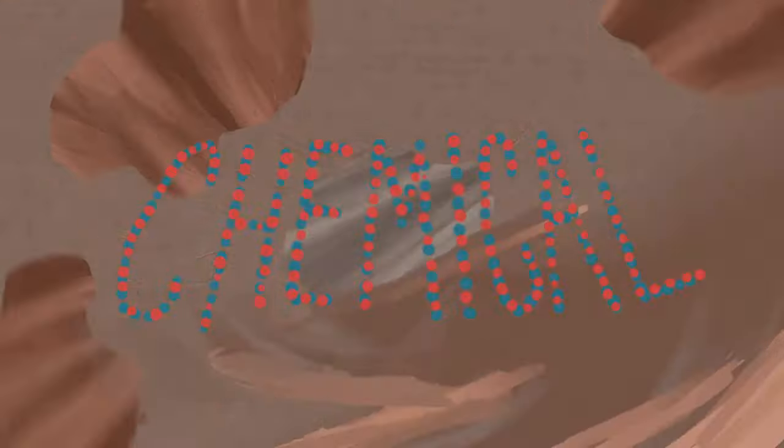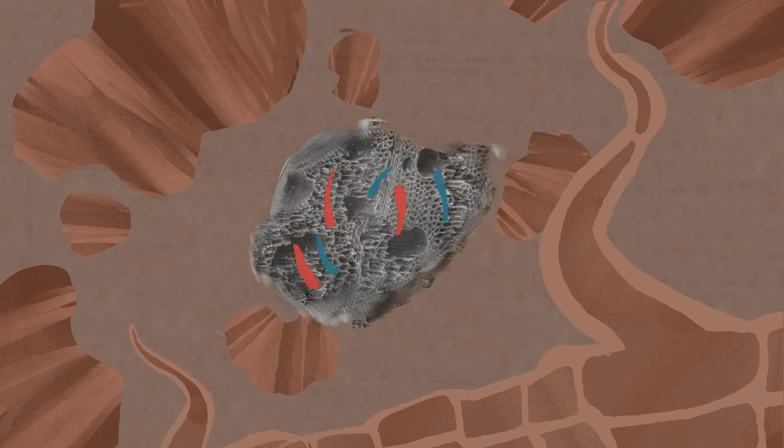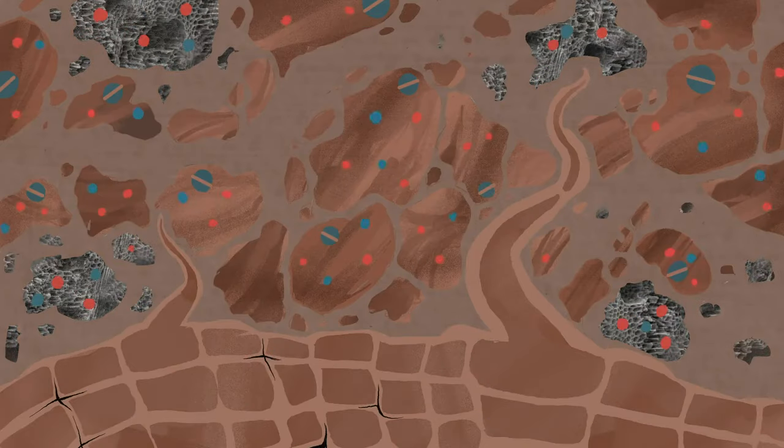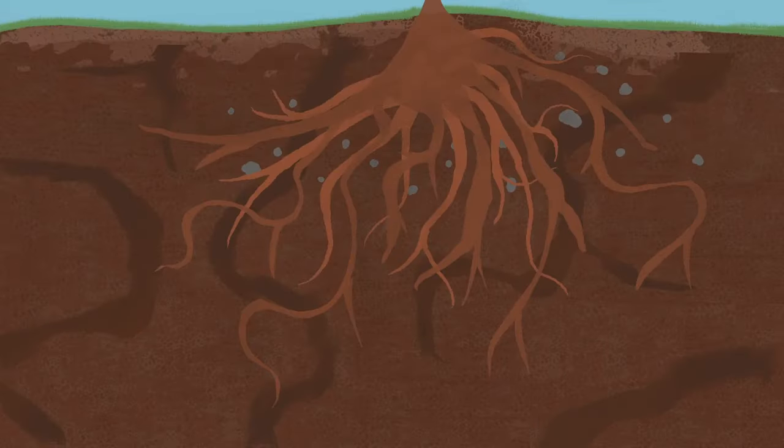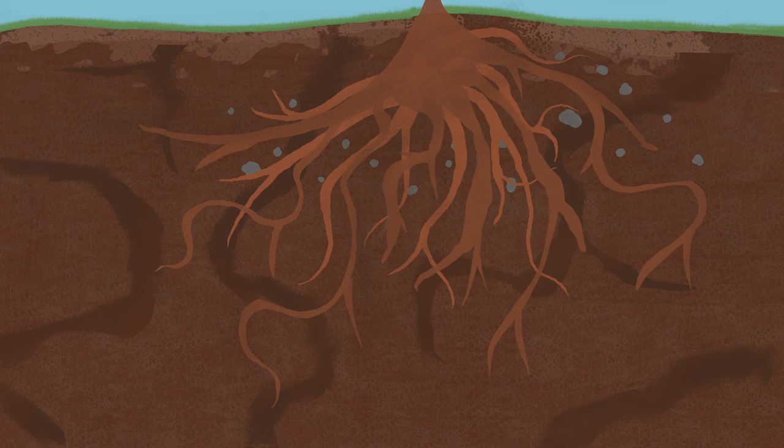Chemical: Biochar is very high in carbon, which is good for a process called cation exchange, which essentially means more nutrients are retained in the soil and available for plant roots. Because of biochar's purity, it doesn't degrade.